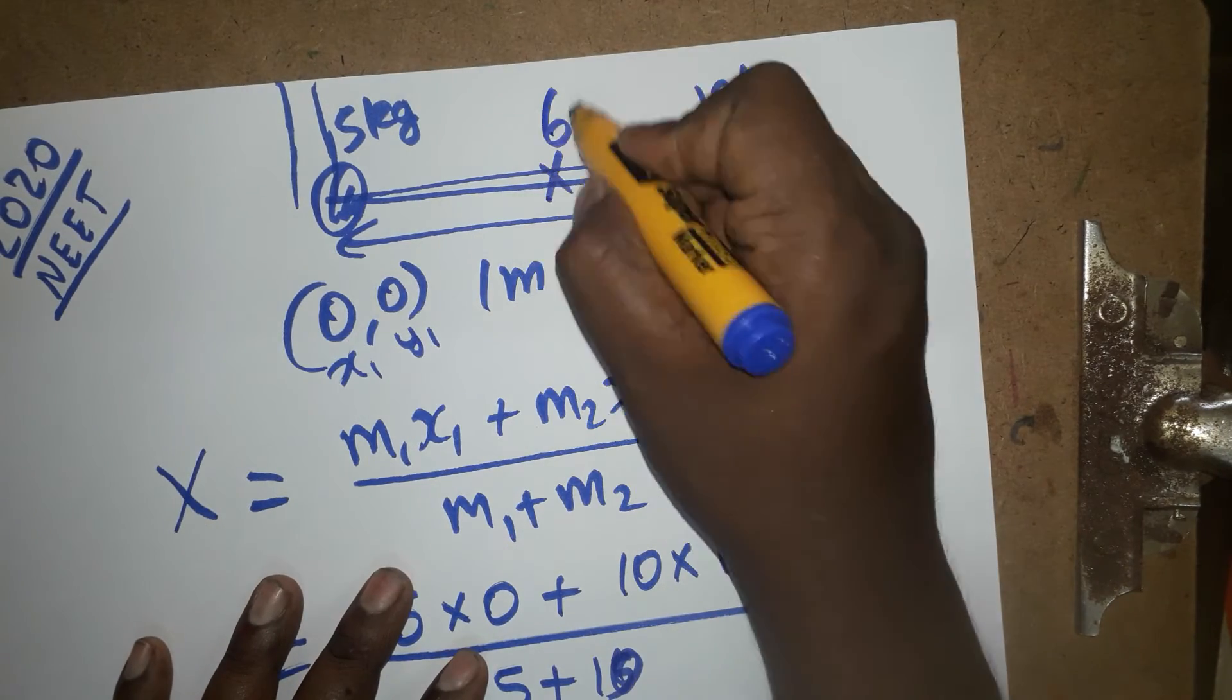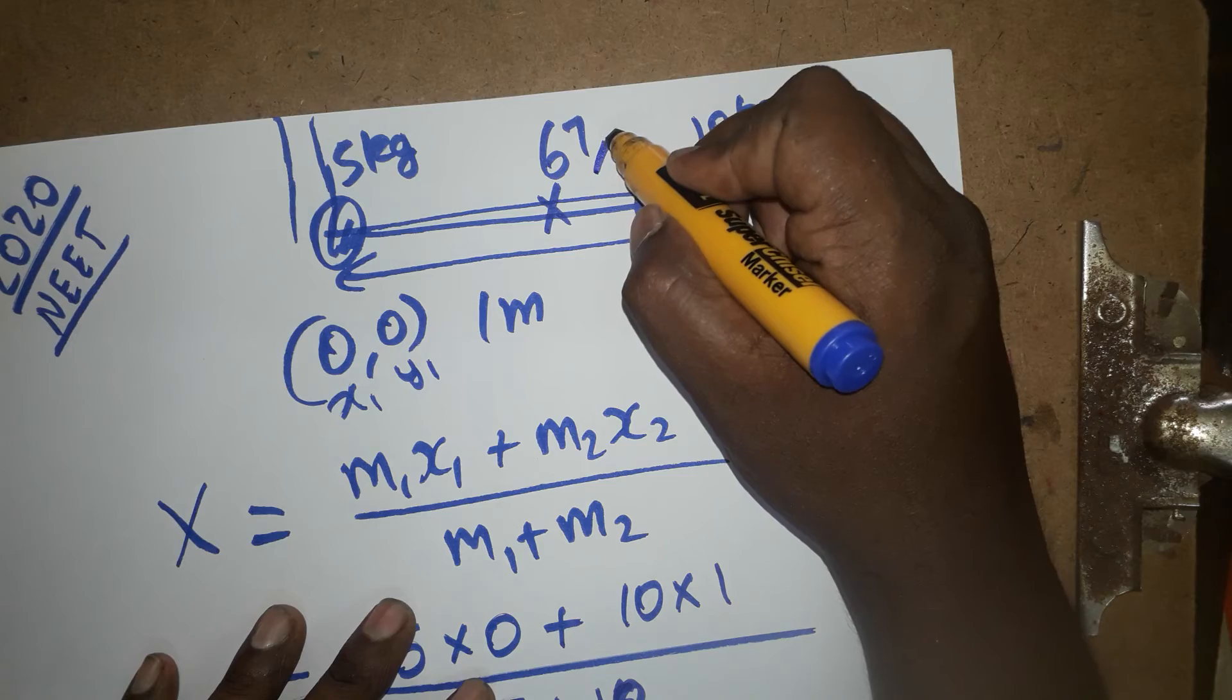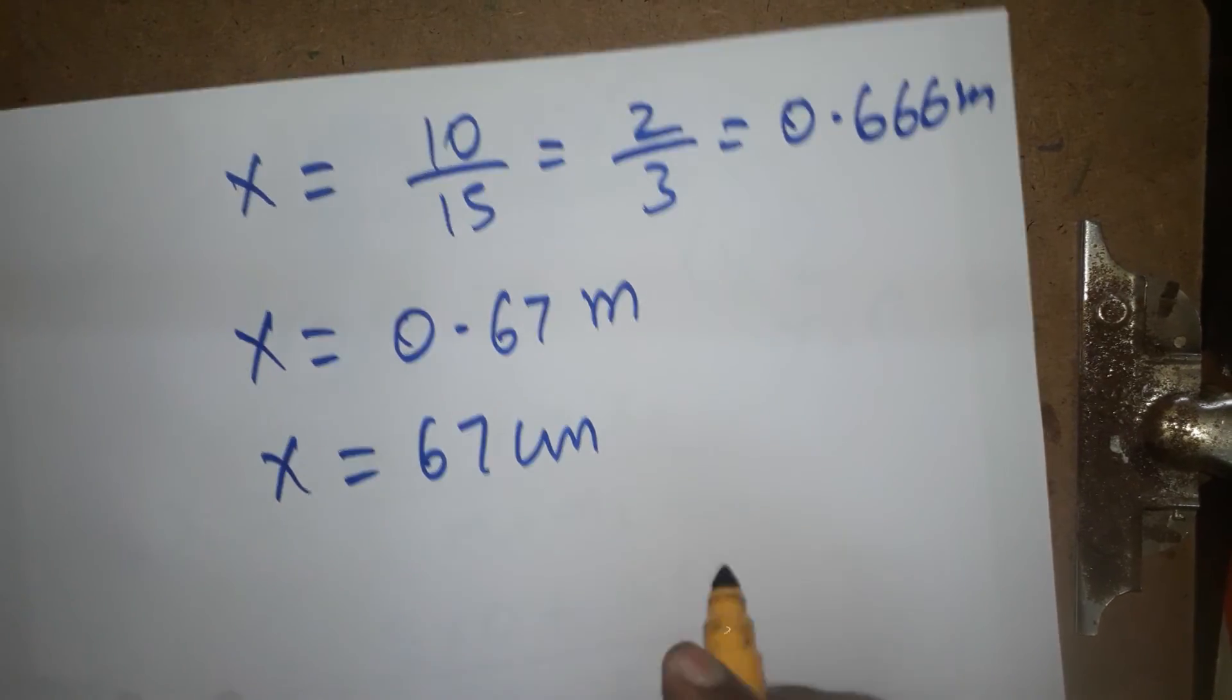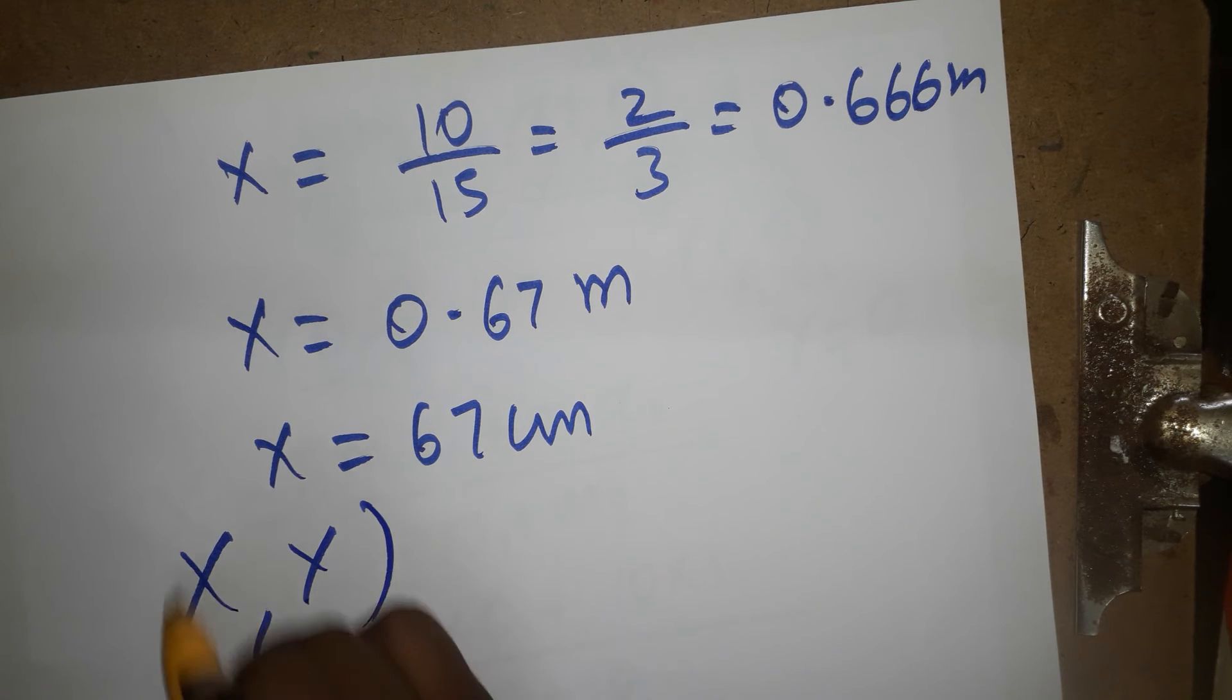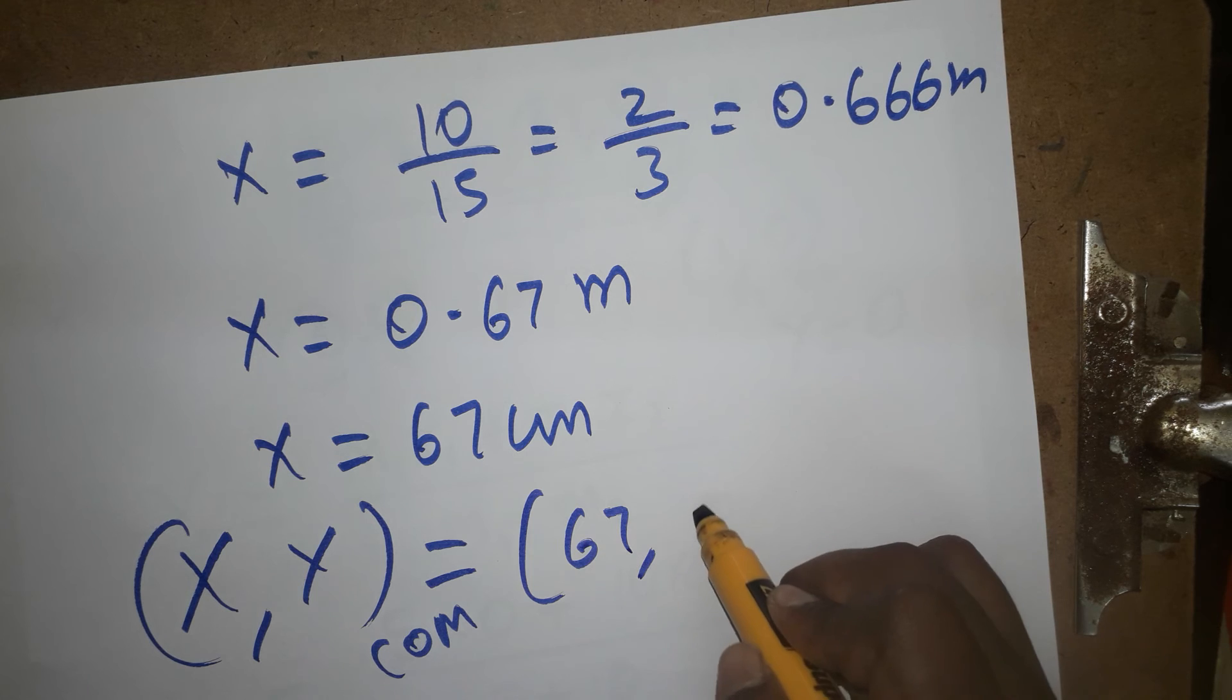Now in between 67 centimeter, our center of mass will be there. x-axis 67, y-axis will be 0. So, answer is for x-axis 67 centimeter. x, y, this is going to be represent as a center of mass, which is going to be 67, 0.